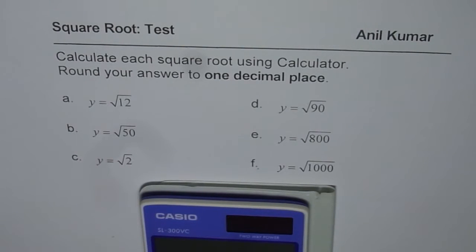I am Anil Kumar and here is a test question for my students. You need to calculate the square root using calculator and then round your answer to one decimal place. So the question here is calculate each square root using calculator, round your answer to one decimal place.